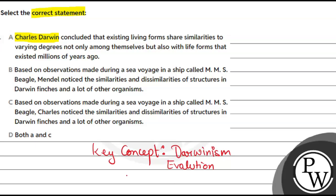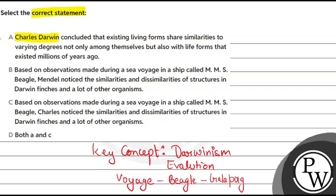He went on a voyage in a ship called HMS Beagle, and he observed various things on that particular island. Here we are talking about Galapagos Islands, where he made his observations and then gave his theories.